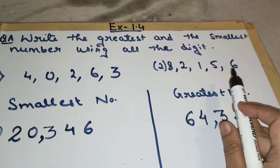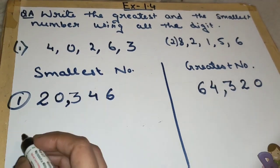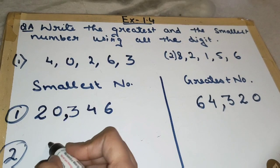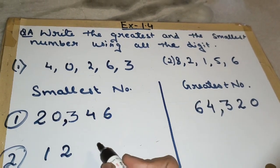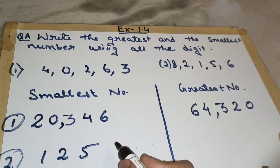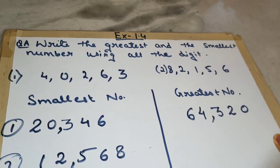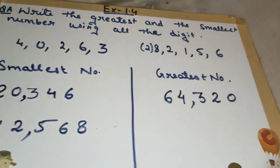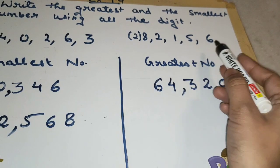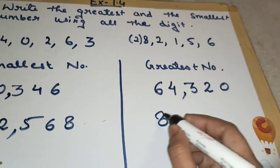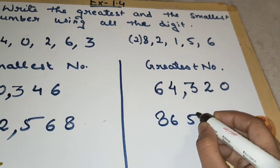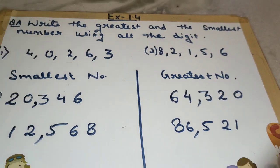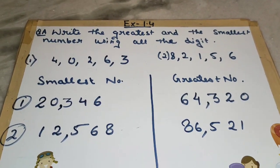Now the second question — the digits are 8, 2, 1, 5, and 6. For the smallest number: the smallest digit is 1, then 2, then 5, then 6, then 8. Put the comma — we got twelve thousand five hundred sixty-eight. For the greatest number: the greatest digit is 8, then 6, then 5, then 2, then 1 — eighty-six thousand five hundred twenty-one. I hope you have understood the greatest and the smallest number.